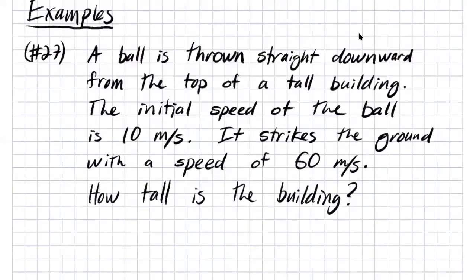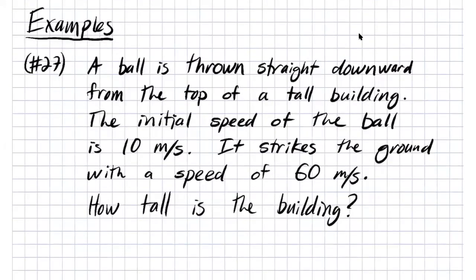Let's look at an example: Problem 27. A ball is thrown straight downward from the top of a tall building. At the moment it passes the roofline, a sensor measures its speed at 10 meters per second going downward, and it strikes the ground at a speed of 60 meters per second. We can use this information to determine how tall the building is.